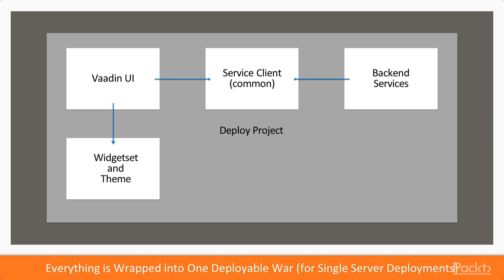Once we've declared all this, if we intend to deploy to a single server that hosts both the backend and the UI, we can wrap everything into one project that doesn't have any actual code, but just a Maven module definition that depends on everything else. This is the only module that is of type WAR and also deployable. Everything else, except for the root project, can be of type JAR. Now let's have a look at how we could really do this with Maven.